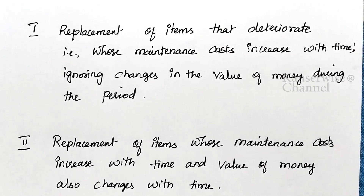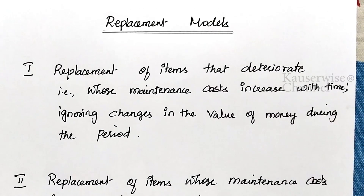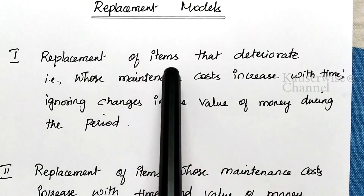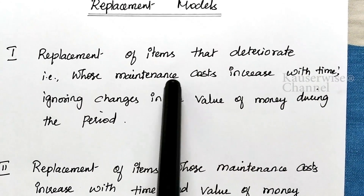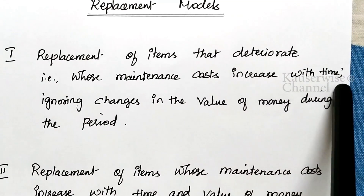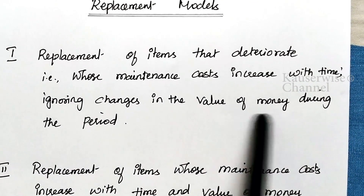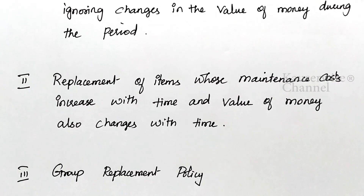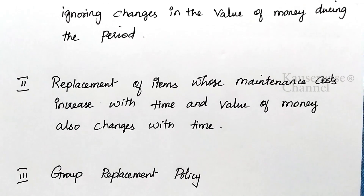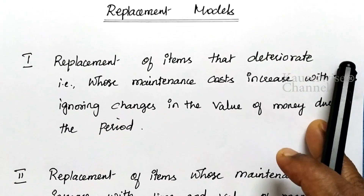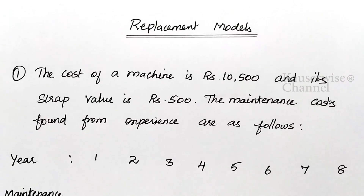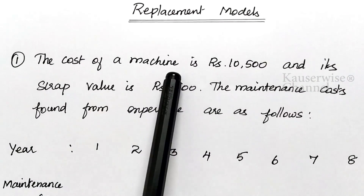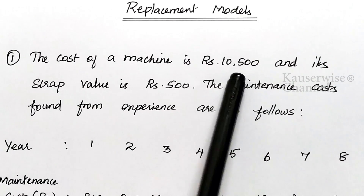Here we are going to see the problem for the first model only — that is, replacement of items that deteriorate, where maintenance cost increases with time but we ignore the changing value of money. The remaining two models we are going to see in the next video; please check the description box to find the links. Now let us see the problem for the first model for better understanding.